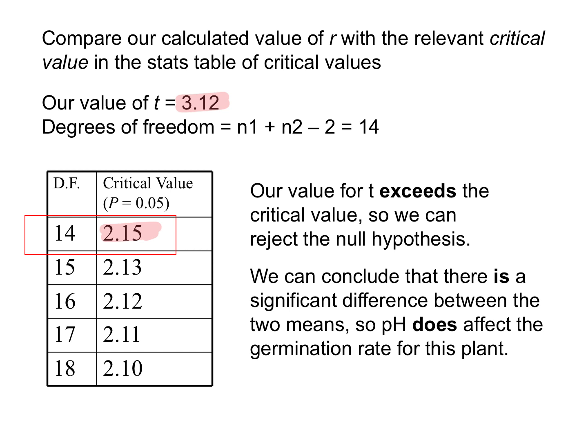It's worth noting that if you're doing A-level Maths, this might seem confusing. Some students find that in Maths they do the opposite — if their value is higher than the table value, it doesn't matter. That's because Maths tables are tables of significance levels, not critical values. In Biology, if your answer is bigger than the critical value, your answer is significant, and you can reject the null hypothesis.